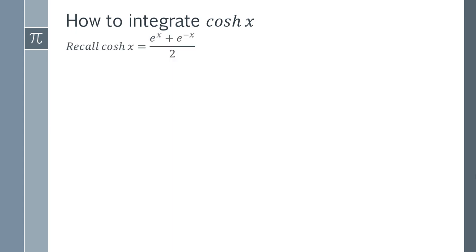We don't know the integral of cosh, so we're going to re-express it in terms of exponentials. The definition of the hyperbolic cosine function is e to the x plus e to the minus x over 2.